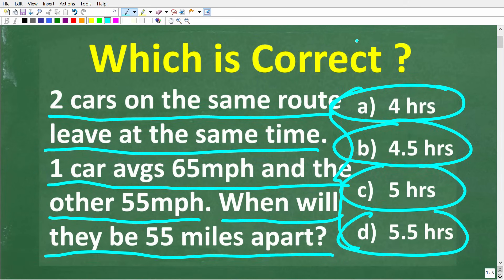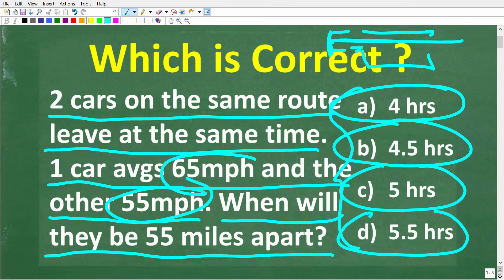All right, so just to be crystal clear about this problem, we have two cars leaving the same place at the same time. Now one car is going faster than the other, so naturally it is pulling away from the slower vehicle. And the question is, when will these cars be 55 miles apart?